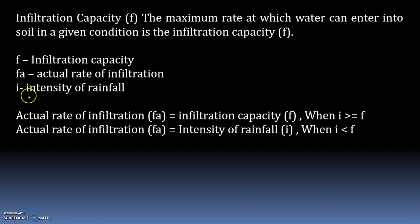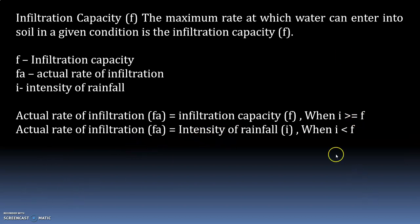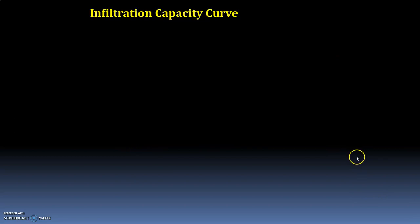FA is the actual rate of infiltration, and I is the intensity of rainfall. The actual rate of infiltration FA equals infiltration capacity F when I is greater than F — meaning intensity of rainfall exceeds infiltration capacity. Similarly, actual rate of infiltration equals intensity of rainfall when I is less than or equal to F.